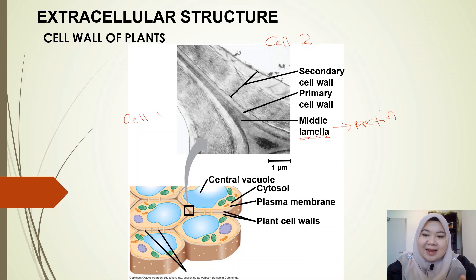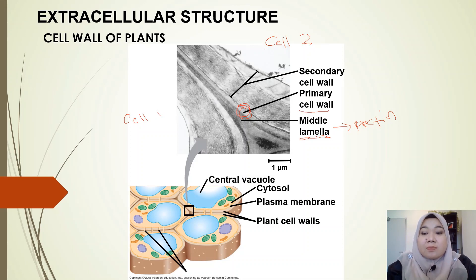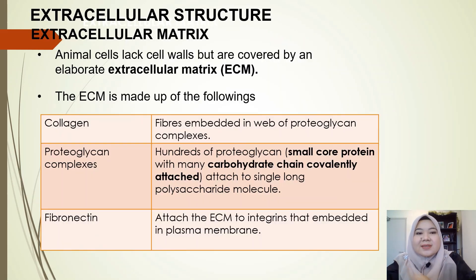To distinguish between the two cell walls, you just need to look at the thickness. The thinner wall is the primary cell wall, because the primary cell wall is thin and flexible. The thicker one is the secondary cell wall. That's all for the plant cell wall — now we're going to look at what we have in the animal cell.